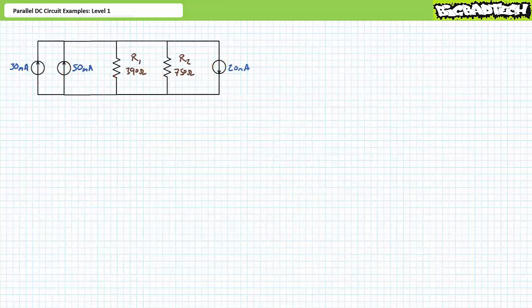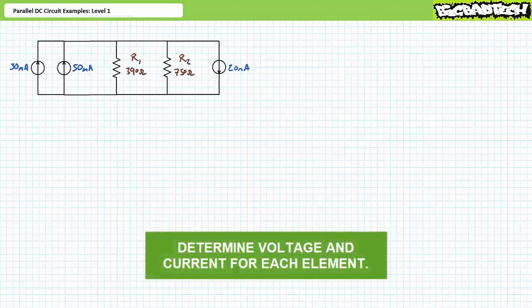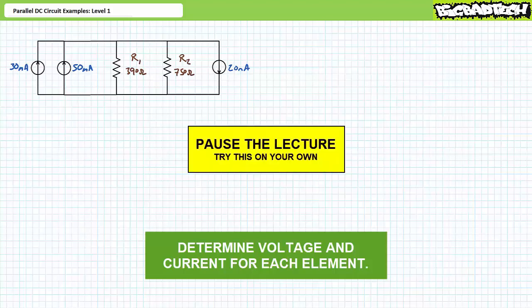Our last illustrated example features three current sources — one at 30 milliamps, one at 50 milliamps, and one at 20 milliamps — in parallel with two resistors, R1 at 390 ohms and R2 at 750 ohms. For this last example, we're only being asked to solve for the voltage drop across each element and the current through each element. Before you perform your analysis, make sure to note the direction of travel for these current sources. By all means, pause the lecture and try this on your own.